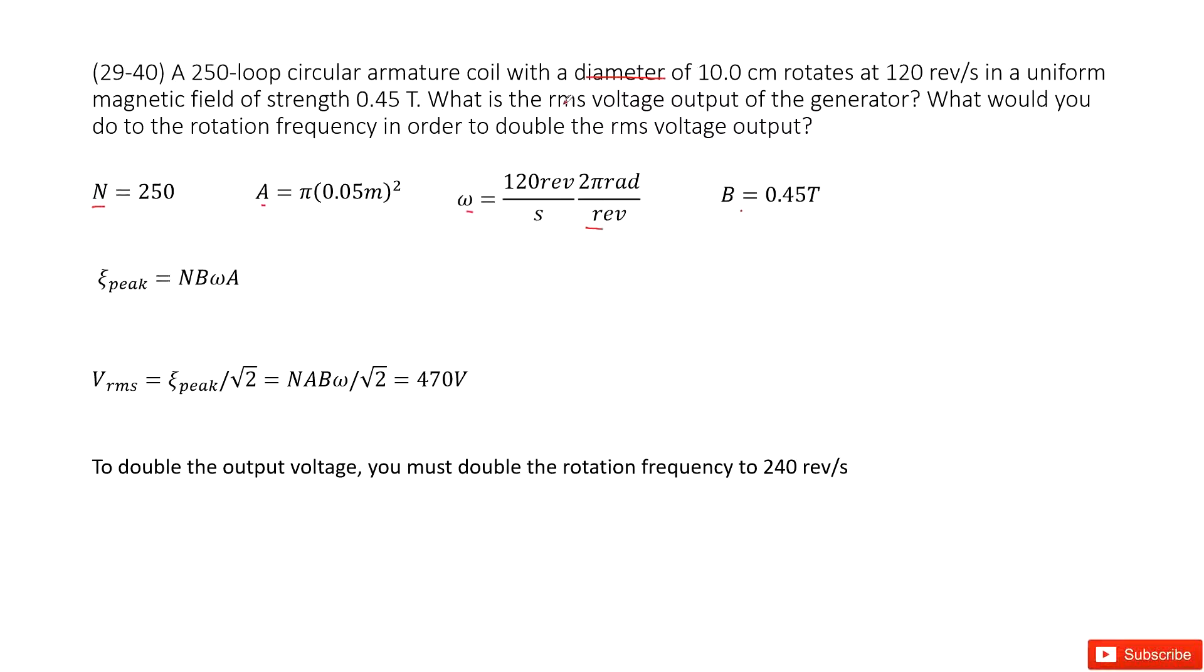Now we look at the RMS voltage. RMS voltage equals the peak voltage, the peak output voltage, divided by square root of two. As we know, the peak output voltage is N B omega A, right? So now you input all the quantities, you get the output. The second one is asking you,